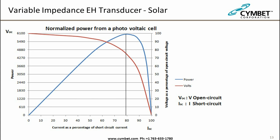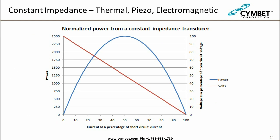For a variable impedance transducer like solar, the red curve shows volts and the blue curve shows power. The peak power point occurs at about 80% of short-circuit current. You must track this as conditions change — solar conditions or temperature can alter transducer characteristics. For a constant impedance transducer, the peak power point is centered over the midline of volts. Both curve types can shift with temperature changes, so MPPT algorithms must be invoked periodically to stay at maximum peak power.